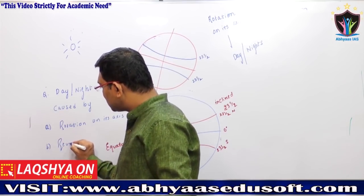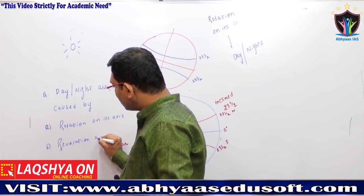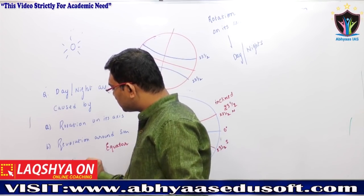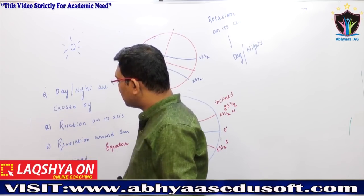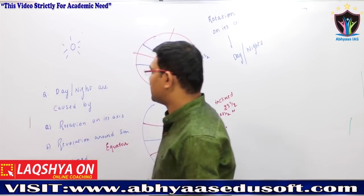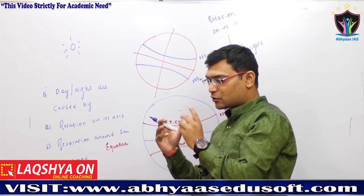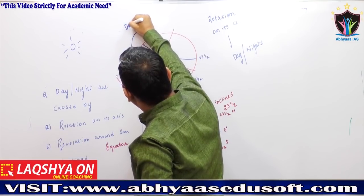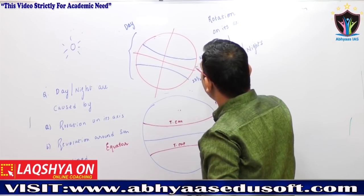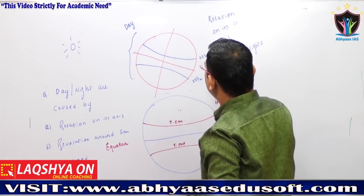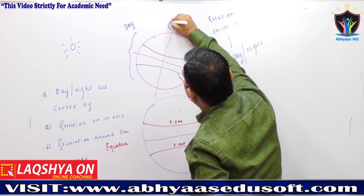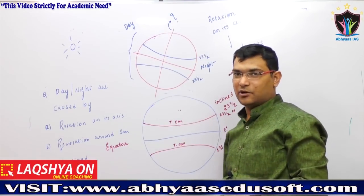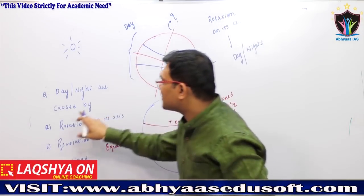Option B: revolution around the Sun. Option C: due to the inclined position. Option D: none of these. The answer is rotation. Because the earth is rotating, whichever part faces the Sun will be day, and the other part not facing the Sun will be night. So days and nights are caused by the rotation of the earth.